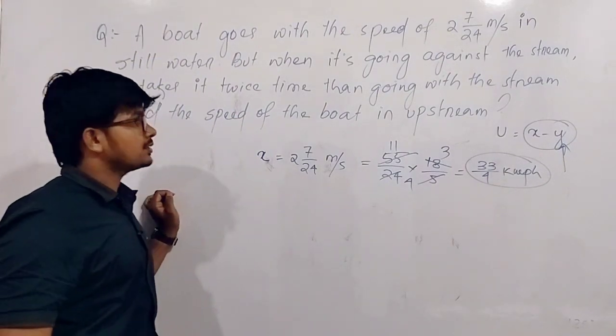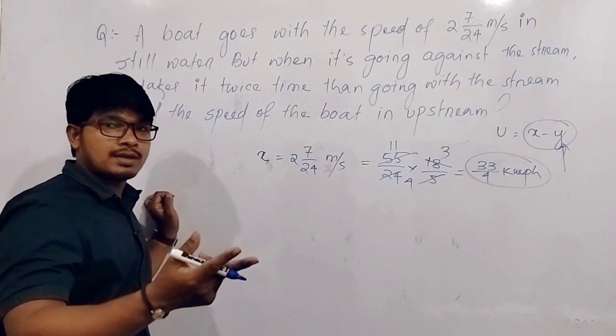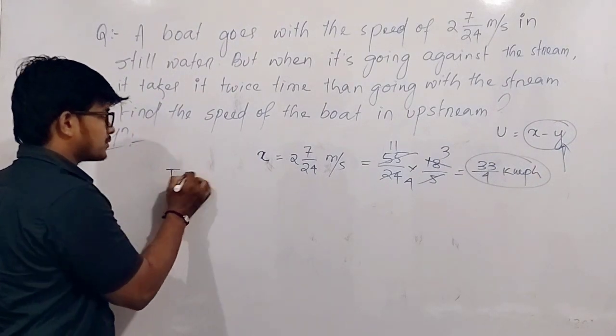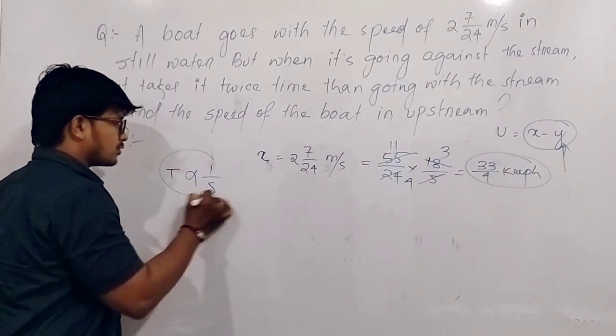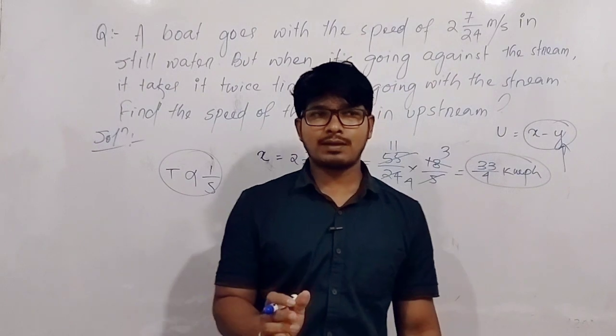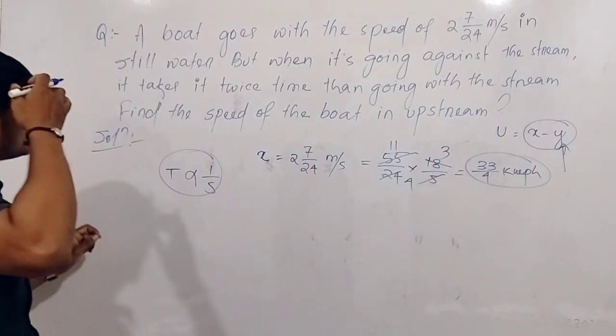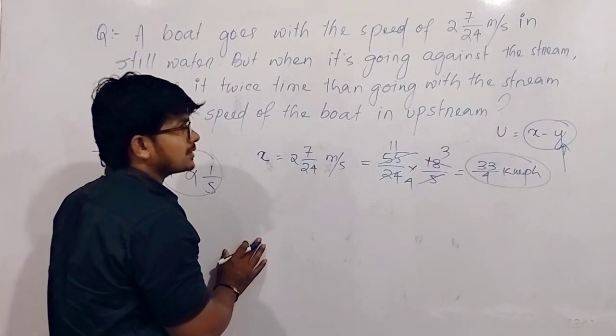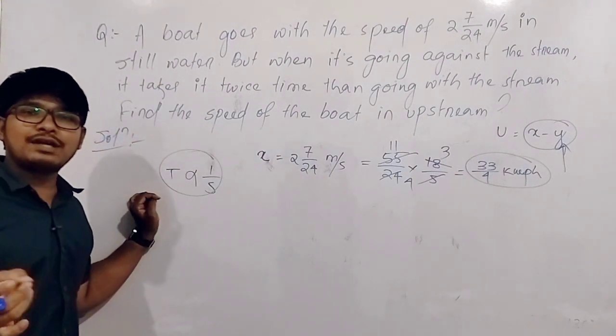How to find y from the second line? Time relationship is given. Upstream takes double the time compared to downstream time. The time is inversely proportional to the speed when the distance is constant. I think you all know this. Whoever has more speed takes less time.